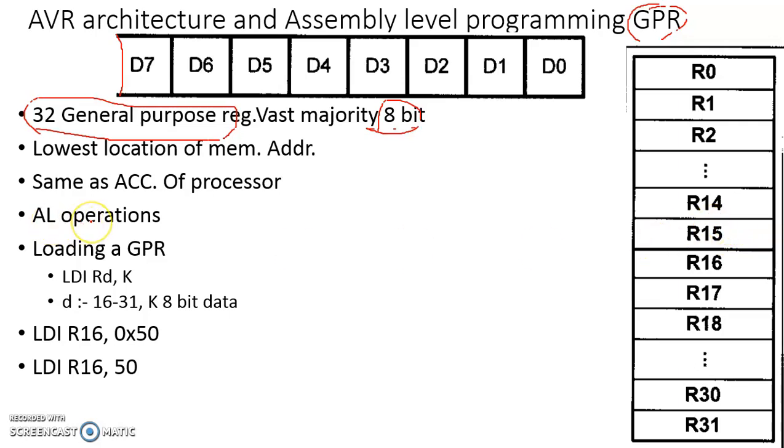The general purpose registers are meant for arithmetic and logical operations. One of the operands must be in one among these general purpose registers. So the GPRs are in fact meant for performing arithmetic and logical operations.